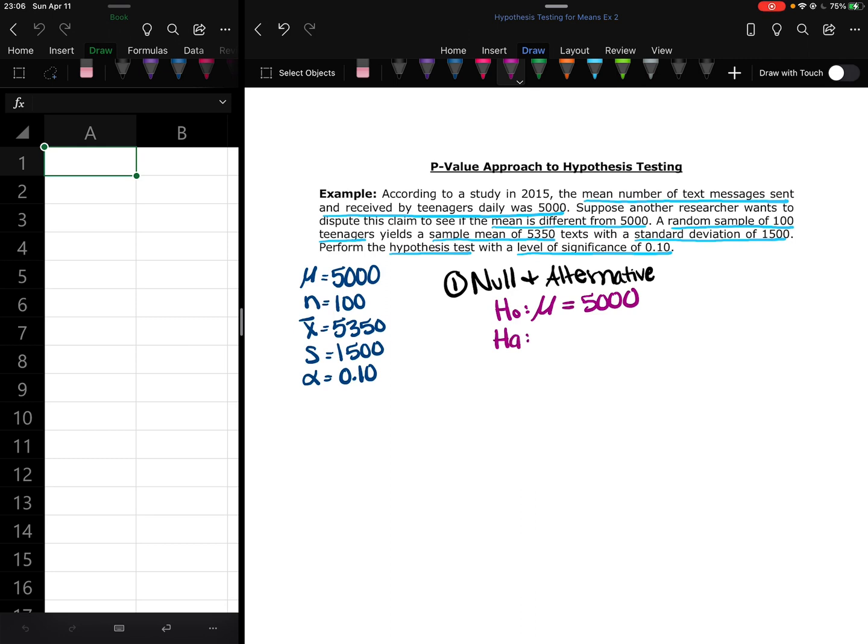And then the alternative would be mu is different from 5000. So that's going to be the not equal to. So that makes this a two-tailed test because the alternative is not equal to.